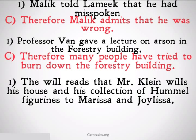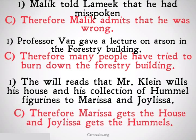The will reads that Mr. Klein wills his house and his collection of Hummel figurines to Marissa and Joylissa. Therefore, Marissa gets the house and Joylissa gets the Hummels. This is ambiguous between a reading that they both share both of those things, or the conclusion drawn that Marissa gets the house and Joylissa only gets the Hummels. Clearly, Joylissa would be arguing for the other interpretation.